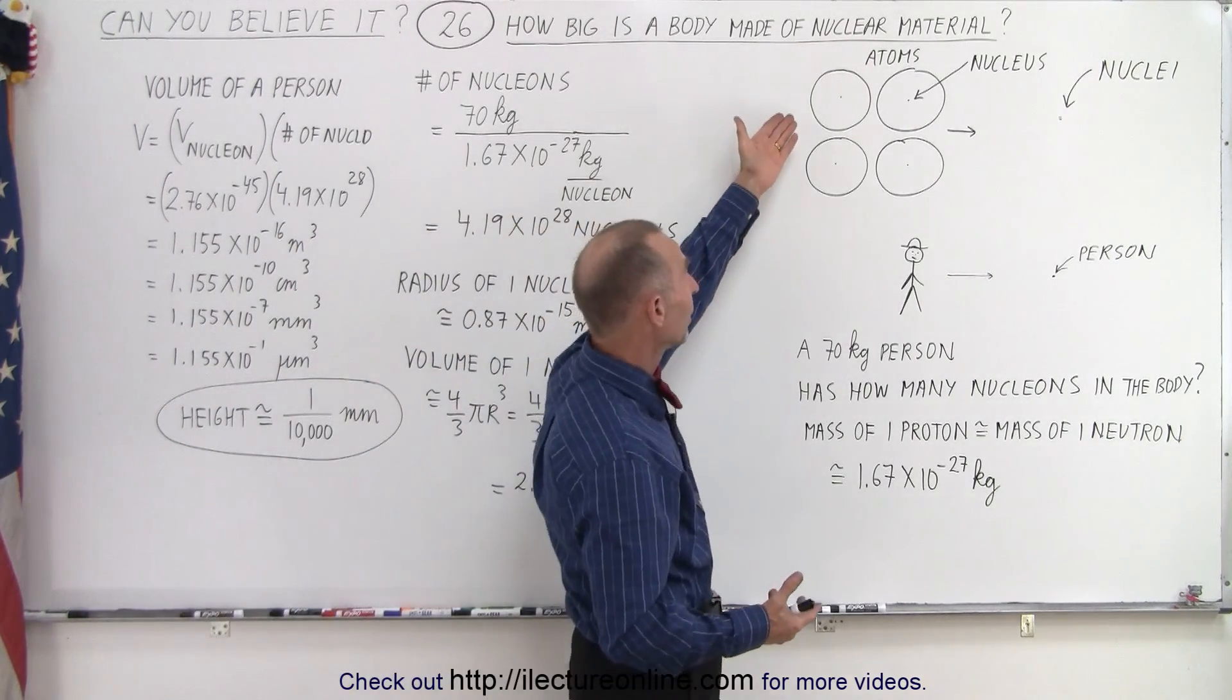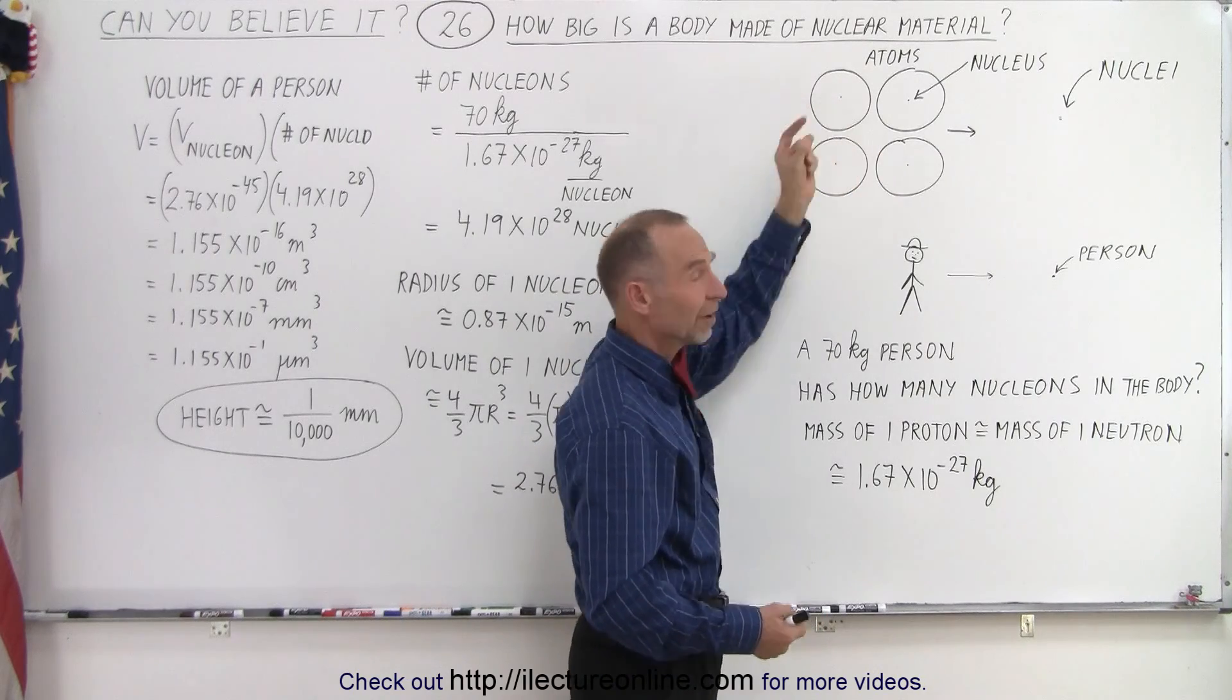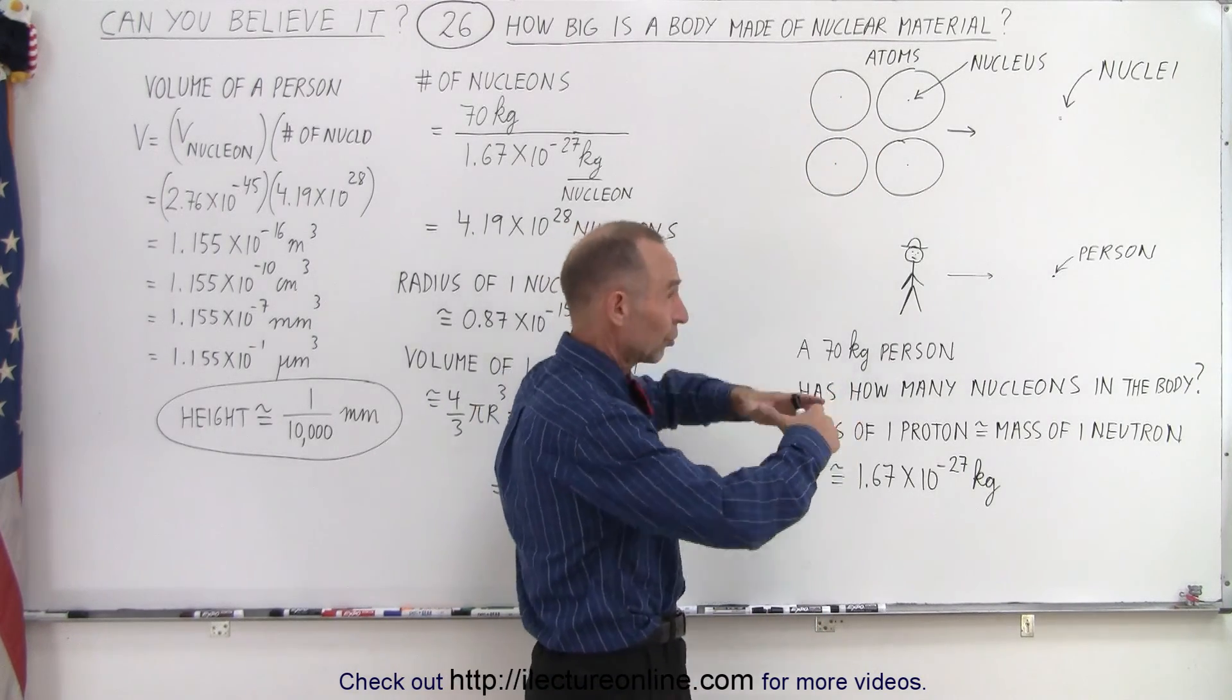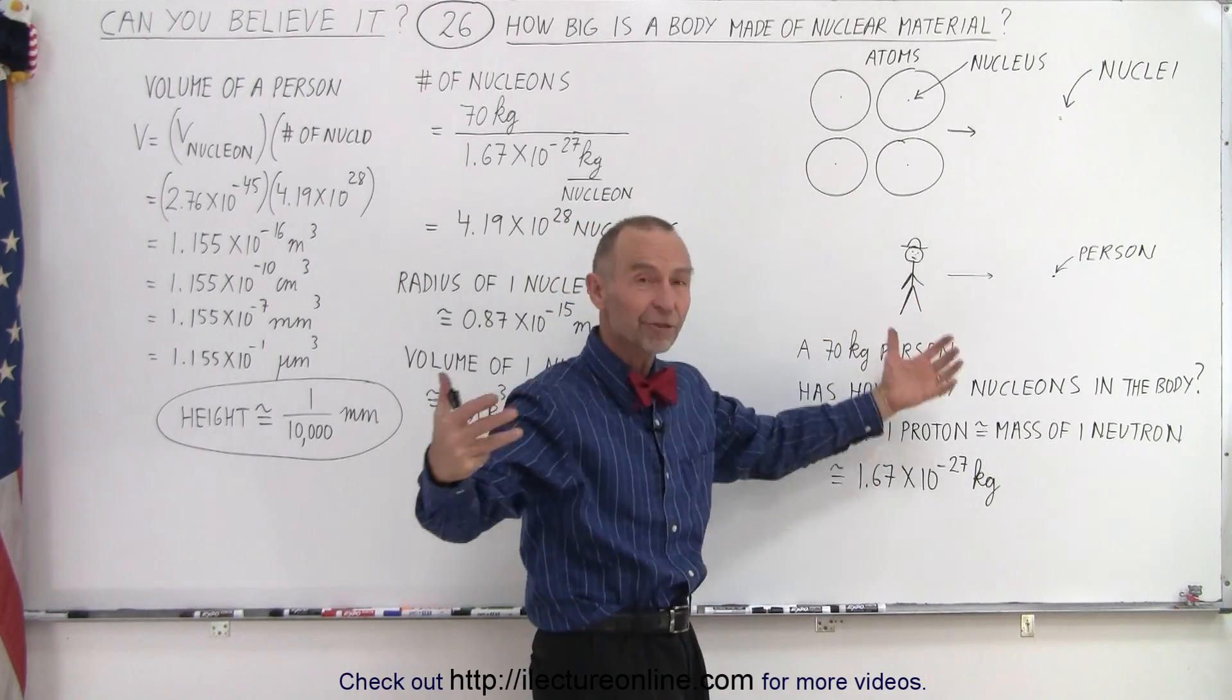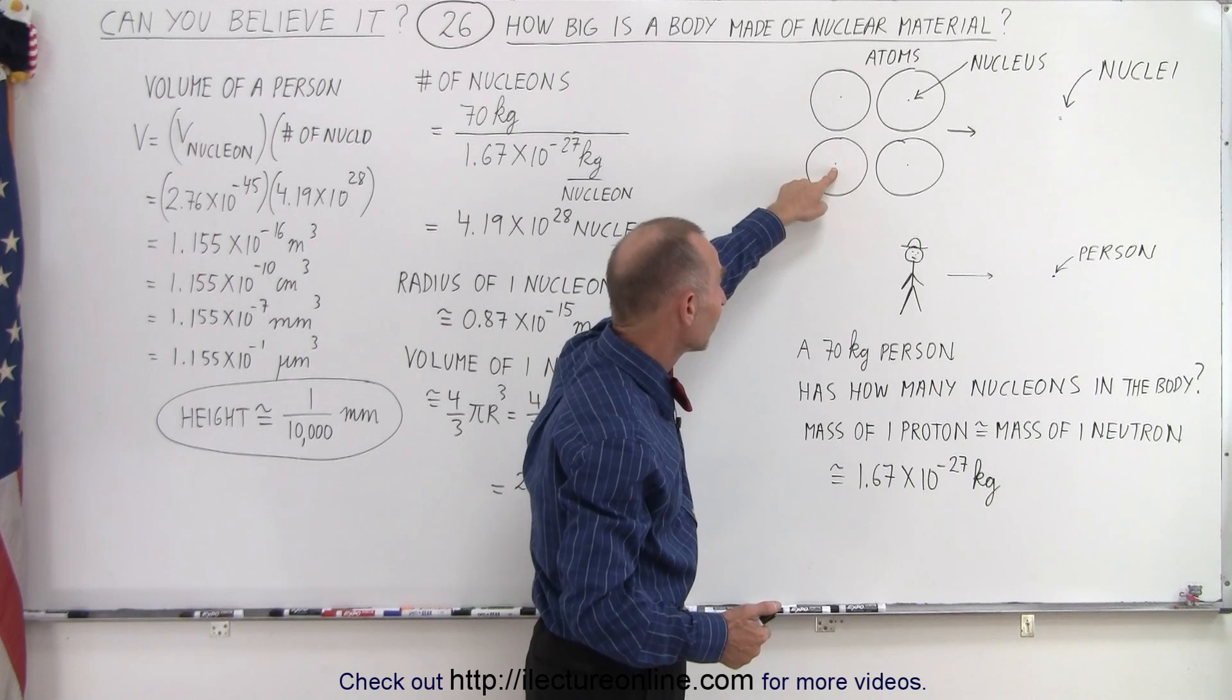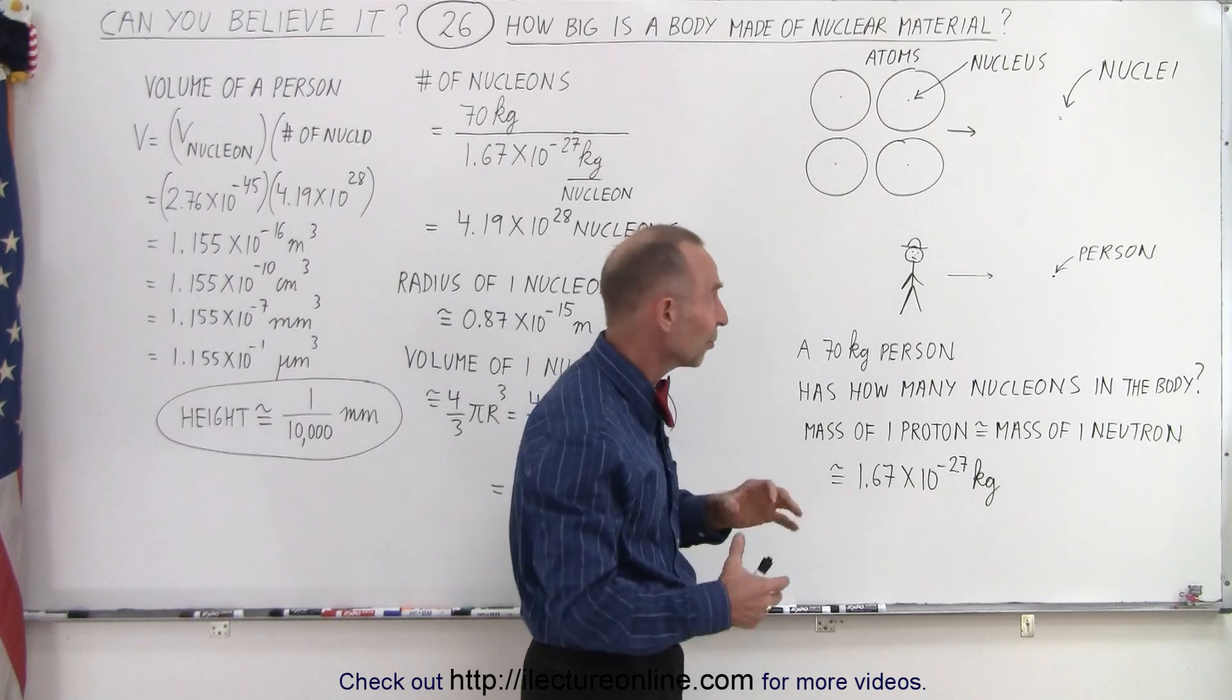For example, here I have pictorially some atoms, and notice at the very center you have the tiny nucleus, and this is way out of scale. Those circles should be bigger than a football field, so to speak. And then we have these tiny little dots in the center representing the mass of the atoms.